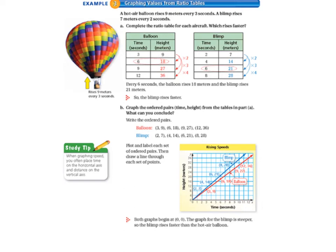Finally, example 3 has us graphing values from ratio tables. So a hot air balloon rises 9 meters every 3 seconds, but a blimp rises 7 meters every 2 seconds.